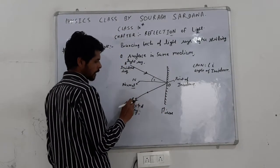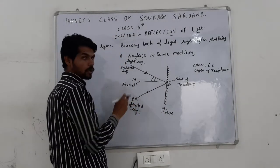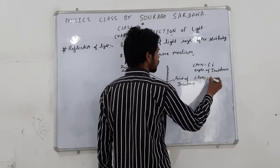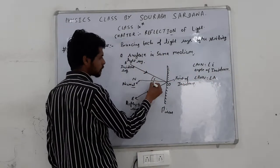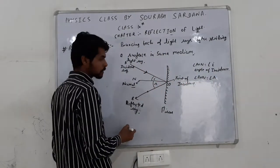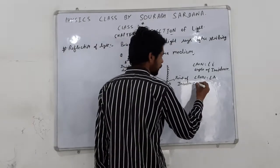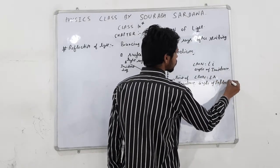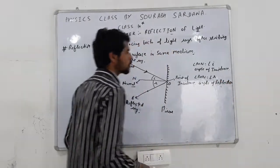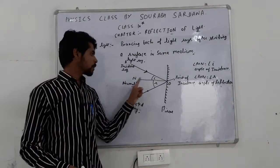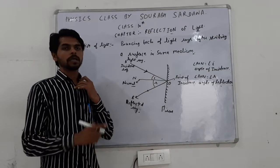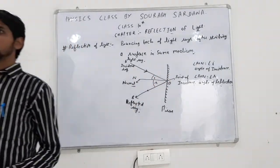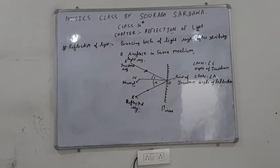Now, another angle — between the reflected ray and the normal — is angle BON, represented as angle R. That is called the angle of reflection. So angle AON is the angle of incidence, and angle BON is the angle of reflection. This was all about reflection of light by a surface.